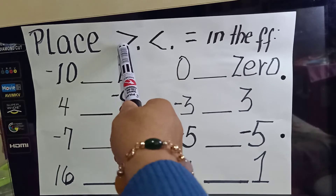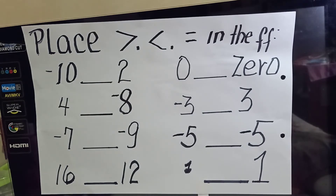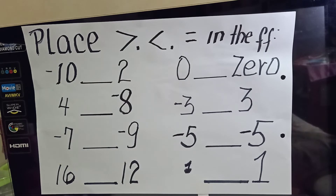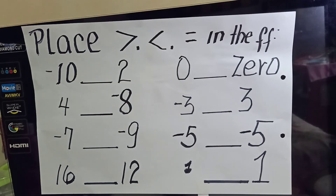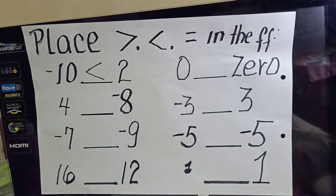Relationships such as whether one is greater than the other, lesser than, or equal to. Example number one: negative 10 and 2 — what relation exists between these two? When we are talking about integers on the number line, we said that any positive number is always greater than a negative number. So negative 10, because it is a negative number, is lesser than 2.